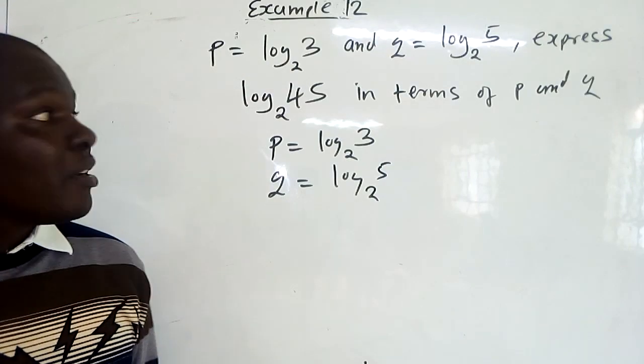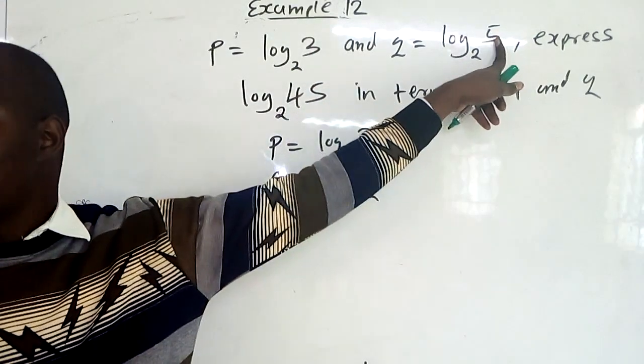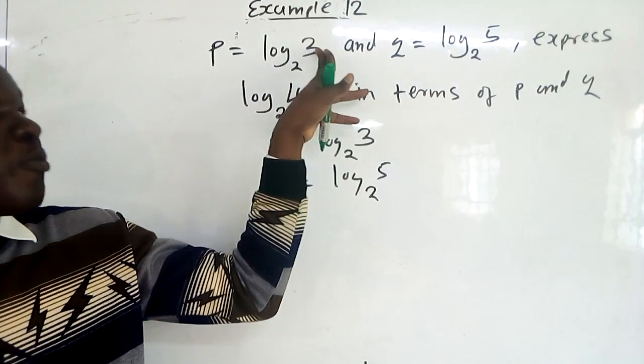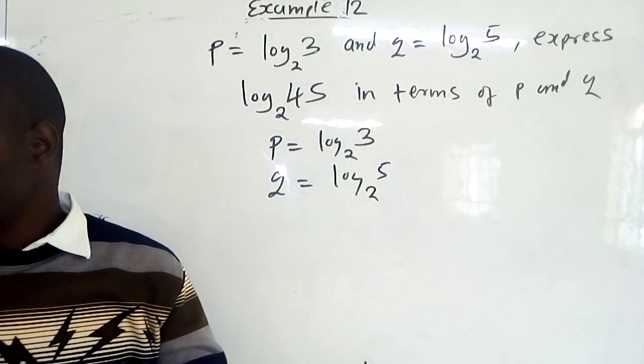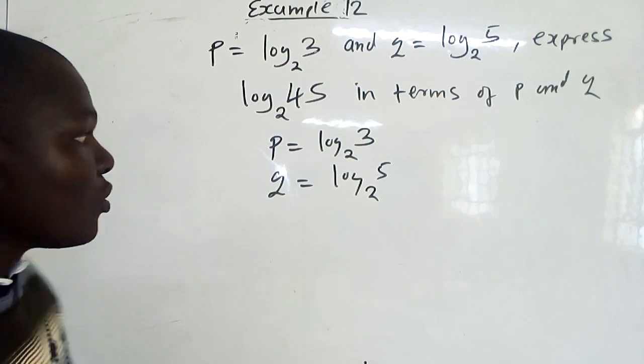Or, if you can factorize 3 further or 5 further, then you see 3 cannot be factorized further and 5 cannot be factorized further. So, we now start.